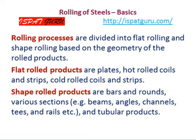The rolling process can also be divided into two types based on the geometry of the roll products. Flat roll products include hot rolled strips, cold rolled strips, plates, skelps, etc. Shaped roll products include bars, rounds, various sections, beams, angles, channels, rails, and tube rolled products.